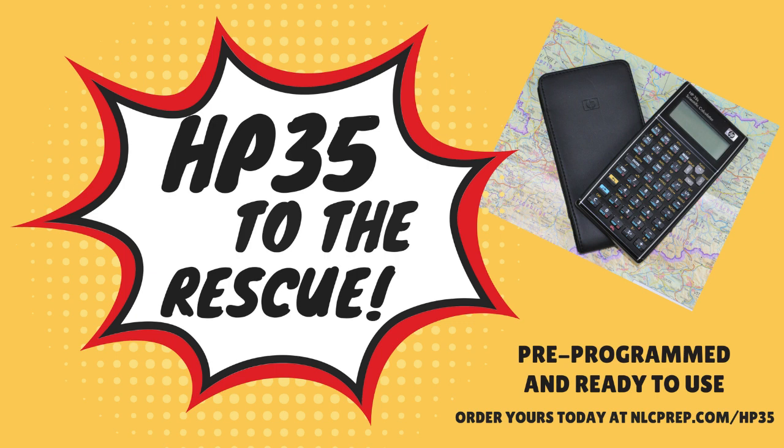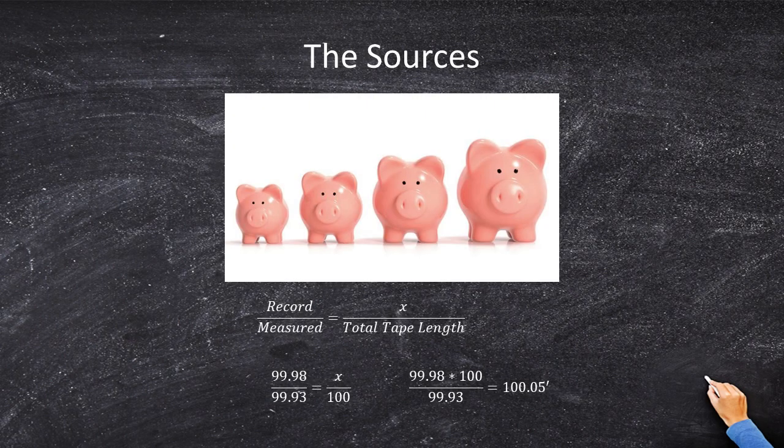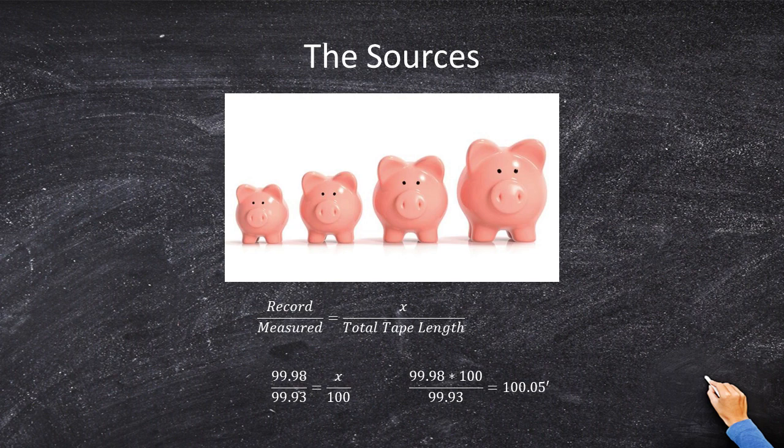This is a basic proportion. We've got a record partial distance of 99.98, a measured of 99.93. Now if this is the partial distance what is the total distance? Well the total record distance of this tape is 100 foot even, so put that in the bottom. And if we rearrange for x we're going to have 99.98 multiplied by 100 over 99.93.